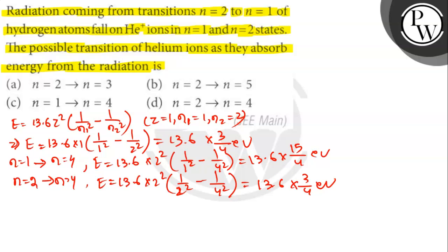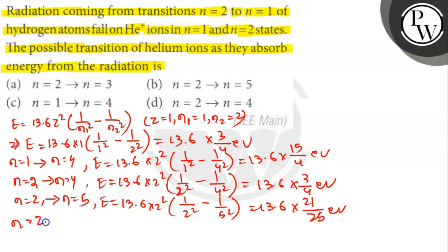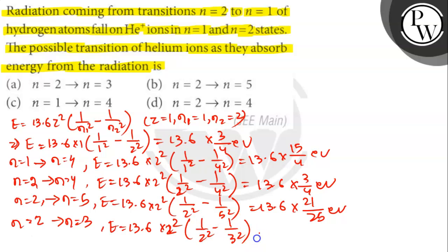Let's check the other options too. In the third case, N=2 to N=5: E = 13.6 × 2² × (1/2² − 1/5²) = 13.6 × 21/25 eV. For the fourth case, N=2 to N=3: E = 13.6 × 2² × (1/2² − 1/3²) = 13.6 × 5/9 eV.